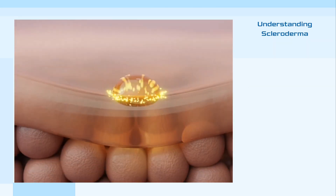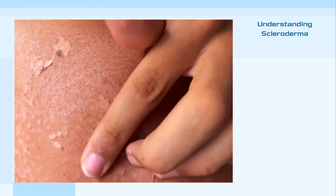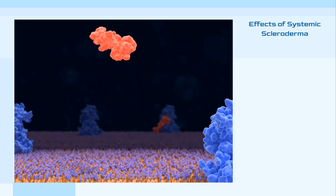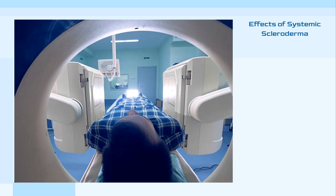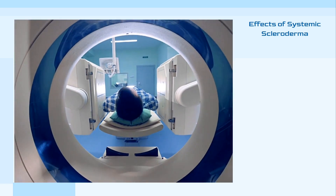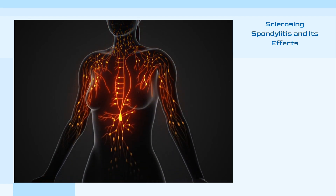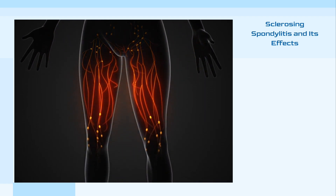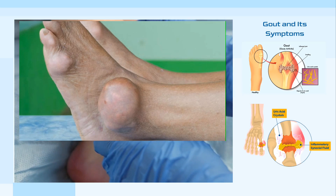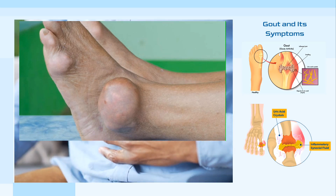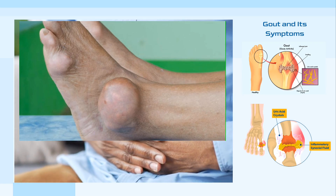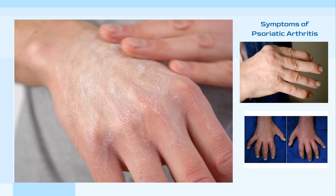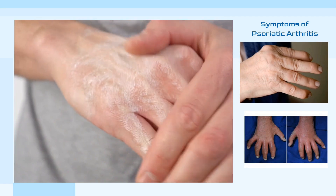Scleroderma, a condition that results from an accumulation of collagen in the body, leads to skin and connective tissue hardening. In severe cases, scleroderma may lead to hardening of blood vessels and internal organs, a form known as systemic scleroderma, affecting movement and causing discomfort. Sclerosing spondylitis, or ankylosing spondylitis, is a form of joint inflammation targeting the spine's bones, causing chronic stiffness and movement restriction. Gout results from uric acid accumulation in the body, forming uric crystals in the skin and joints, causing pain, redness, and swelling, especially in the big toe. Psoriatic arthritis is characterized by swollen fingers, nail separation, tendon inflammation, polyneuropathy, and lower back pain.